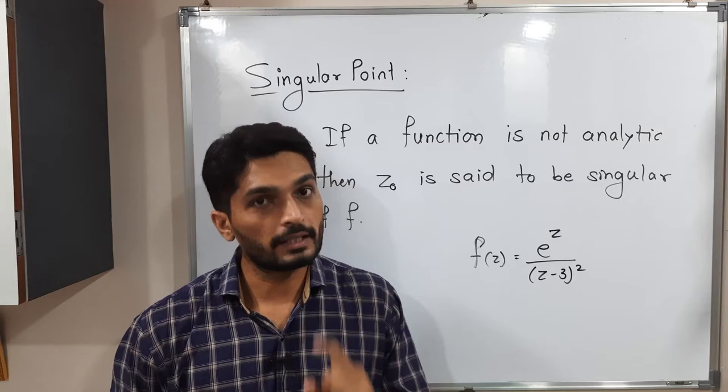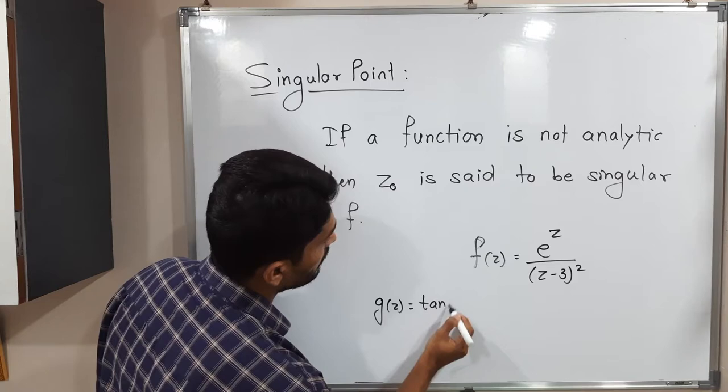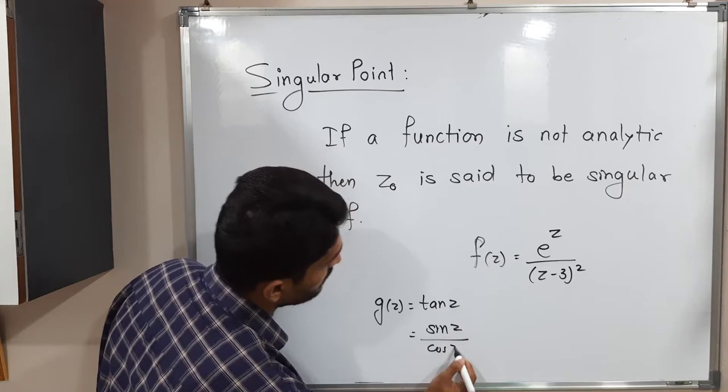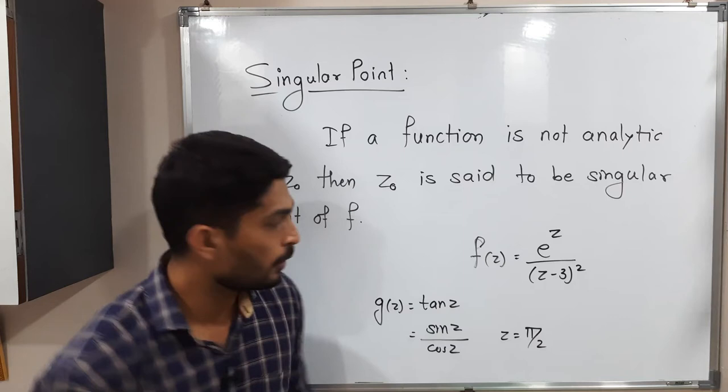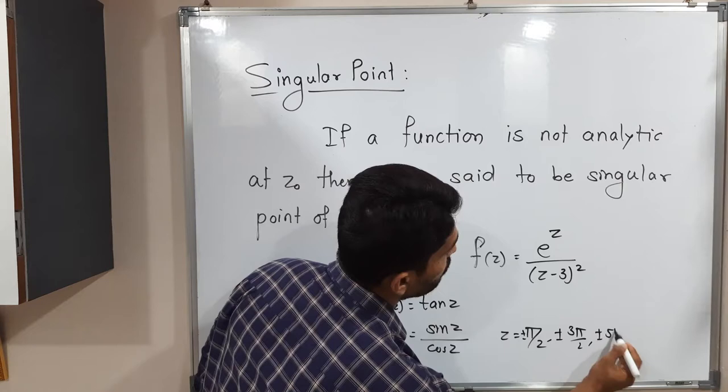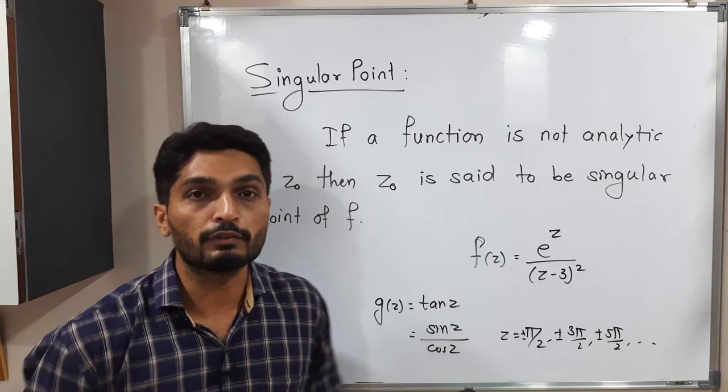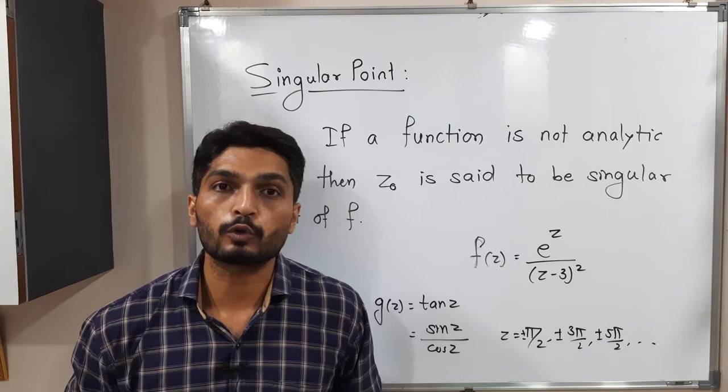Let us discuss one more example. Suppose we have a function g(z) = tan(z), which equals sin(z) / cos(z). The denominator cos(z) will be 0 at z = ±π/2, ±3π/2, ±5π/2, and so on. For all these values, cos(z) = 0, meaning the function is not analytic. So we call all these points singular points.